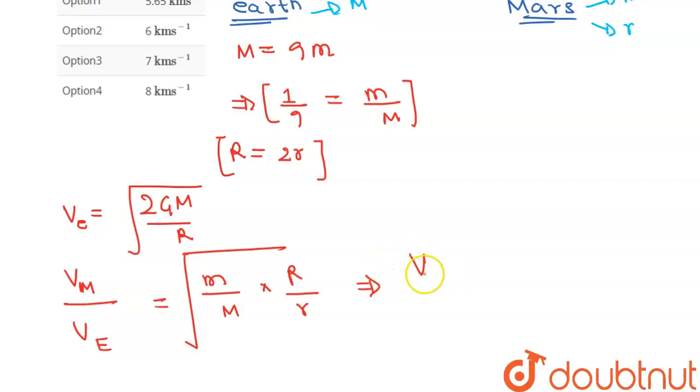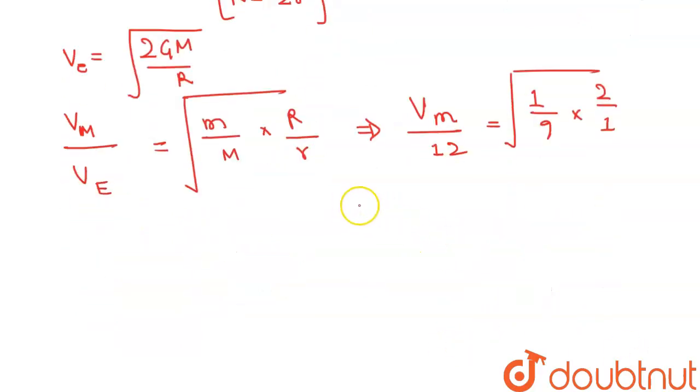So velocity for Mars, v_m over 12 is equal to 1 over 9 times 2 over 1. Escape velocity for Mars is equal to